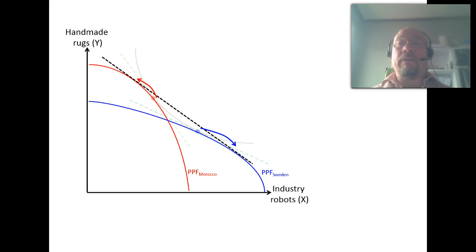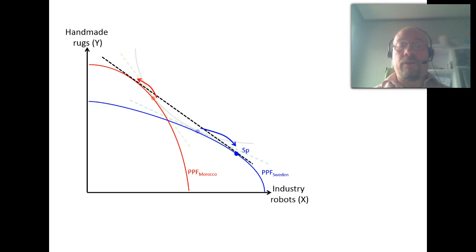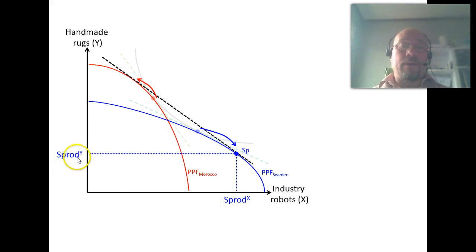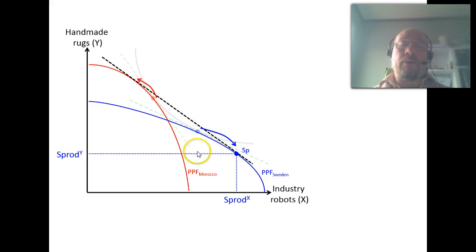This will continue as long as we have different relative prices in the two countries — that is, until we have the same relative price. If we draw one straight line tangent to both production possibility frontiers, the cost of producing one more industry robot expressed in handmade rugs will be equal in both countries. In Sweden, the production point SP shows that we produce more industry robots and fewer handmade rugs compared to the autarky situation.